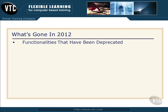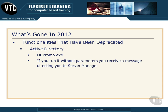Now let's turn our attention to functionalities that have been deprecated. In Active Directory, the DCPromo executable has been deprecated — it's going away at some future version. If you run it right now without parameters, which is what we've always done to promote member servers to domain controllers, you'll receive a message saying to go run Server Manager instead. However, if you use the /unattend switch, it still functions just like it always did. But understand you're losing DCPromo in the near future.